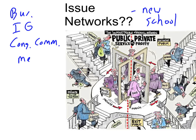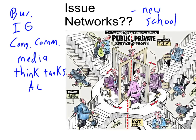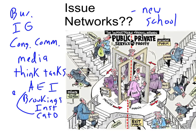Issue networks include members of the media and what are called think tanks. A think tank, to make a long story short, is a university without students — it's a research institute. They do the research for the parties and different interest groups, and use that research to guide future policy. Some famous ones are the American Enterprise Institute, which is very conservative; the Brookings Institute, which is very liberal; and the Cato Institute, which is libertarian. These are examples of research institutions that help out political parties and organizations.